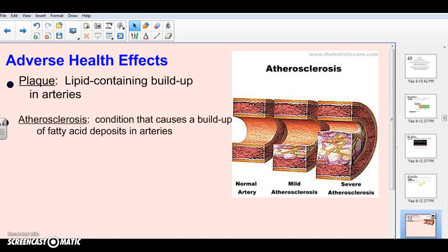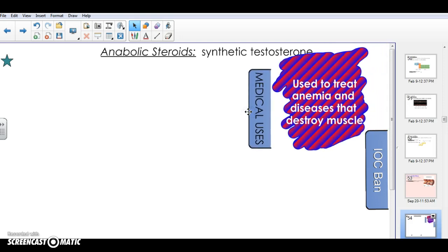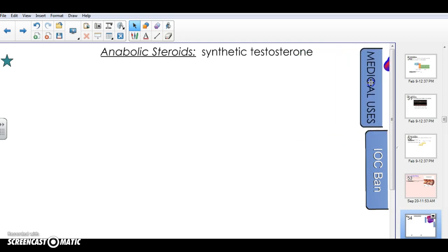The last thing we're going to talk about today is probably the steroid you were thinking of when I first said steroids: anabolic steroids. These are synthetic testosterone. There are absolutely legit medical uses for anabolic steroids. They are mainly used to treat anemia and diseases that will destroy muscle. If you think about the point of anabolic steroids, they do build muscle. However, if you're taking a medicine like anabolic steroids and you don't have a disorder like anemia or muscle degeneration disorder, it's going to cause some pretty serious adverse effects.